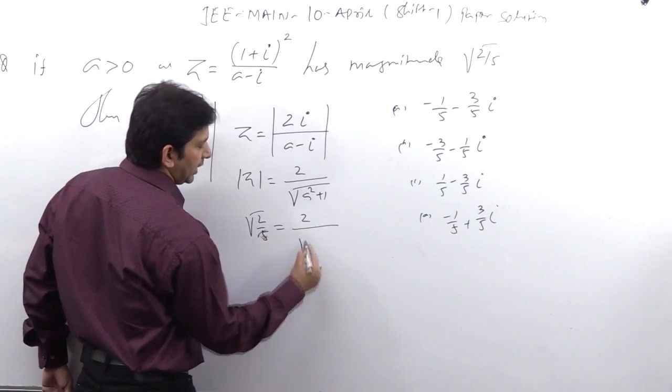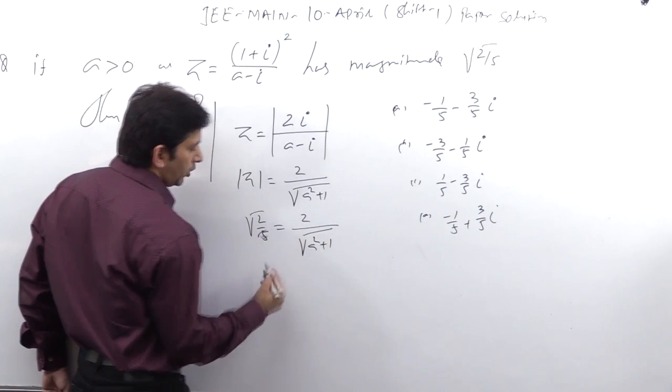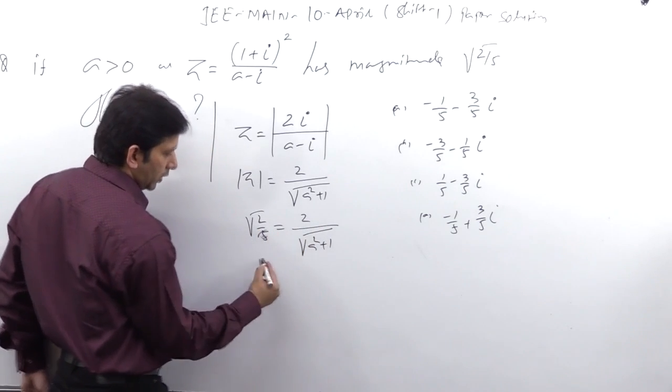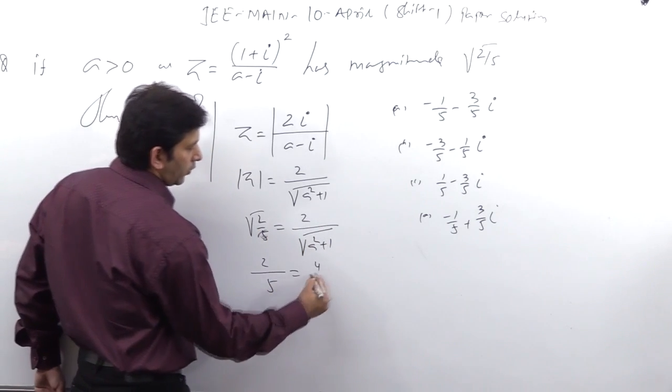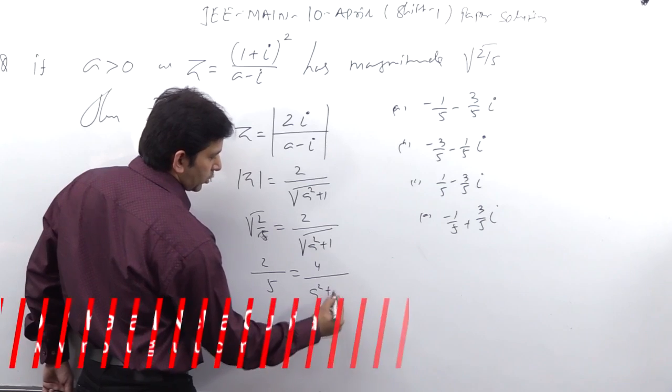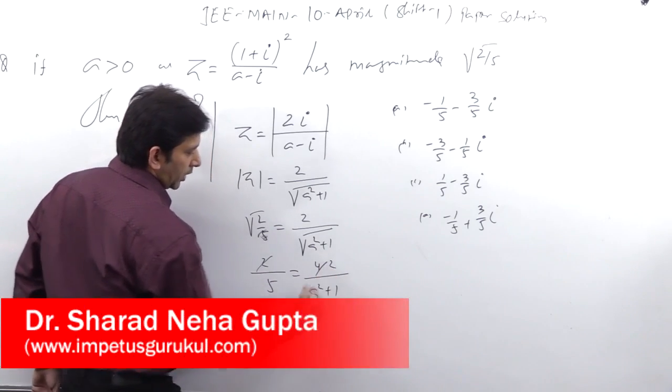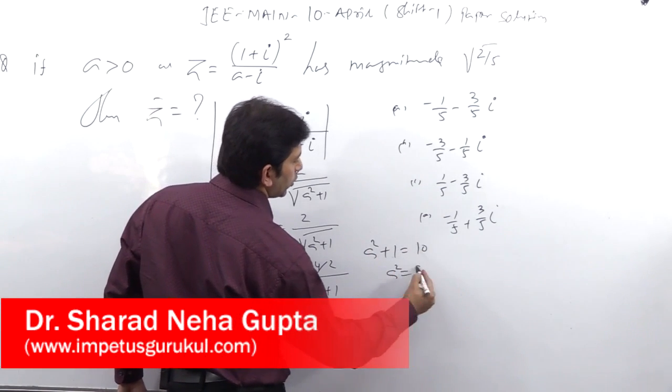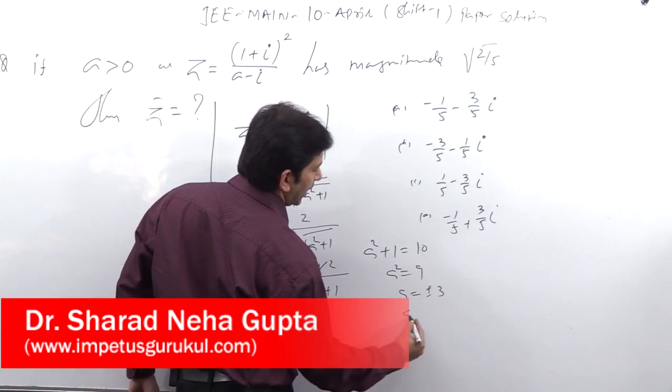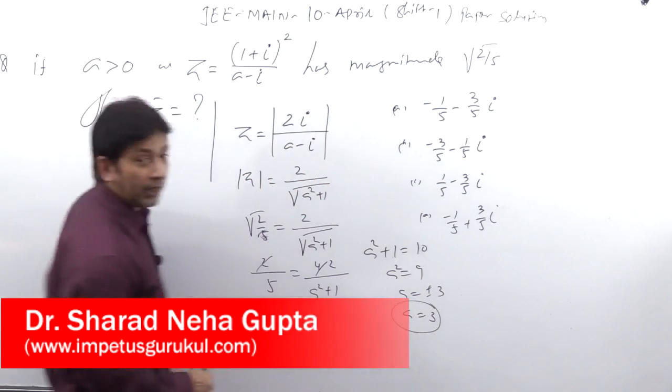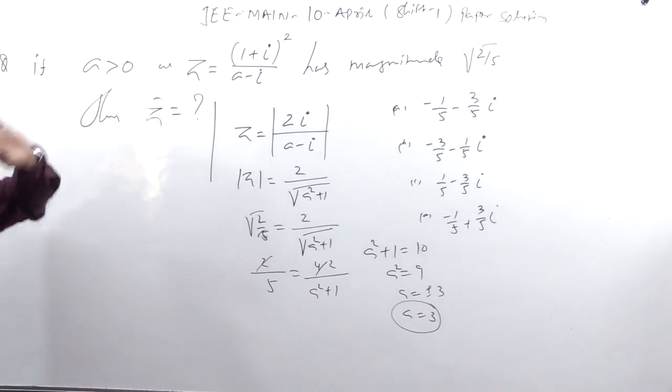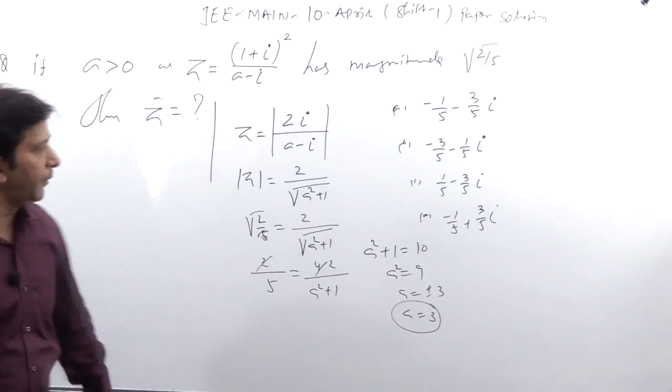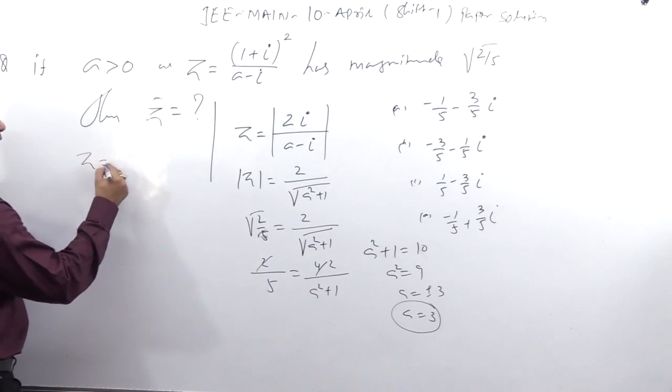Squaring on both side, 2 upon 5 equal to 4 upon (a² + 1), cancel two times, then a² + 1 equal to 10, then a² equal to 9, then a equal to plus minus 3, then a equal to only plus 3 because a greater than zero.